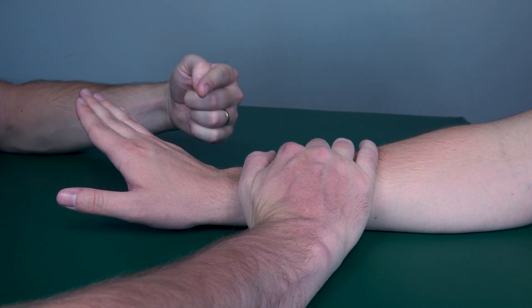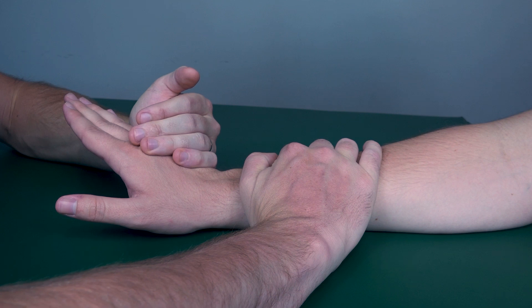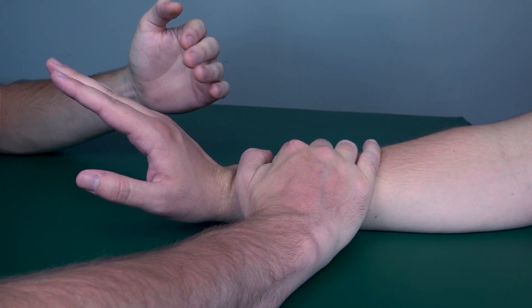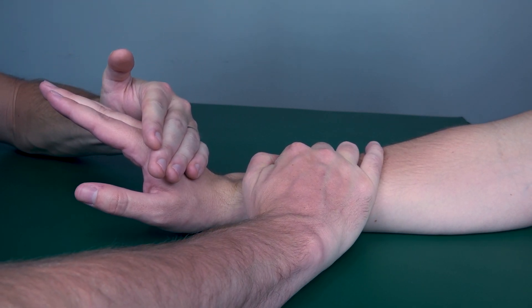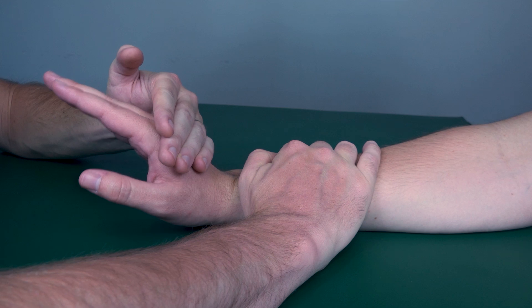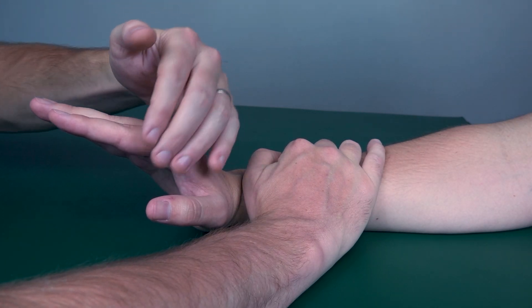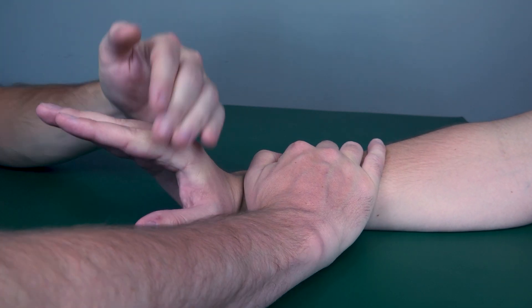Resist me, three, two, one. Now do brevis, and I'm going to add resistance into flexion. Resist me, three, two, one. And then for longus, I'm going to push it ulnarly and into flexion. Resist me, three, two, one. Very good.